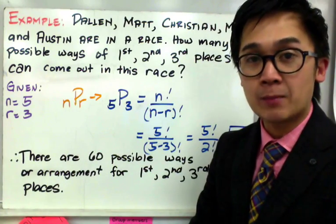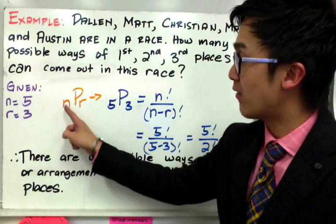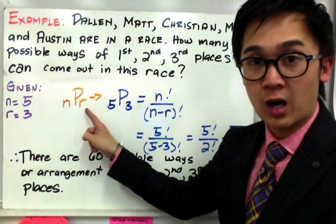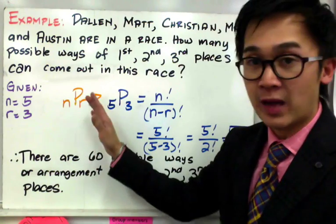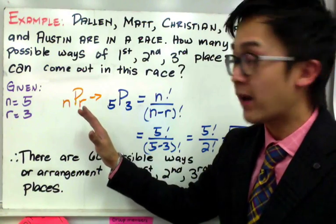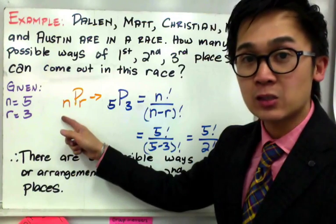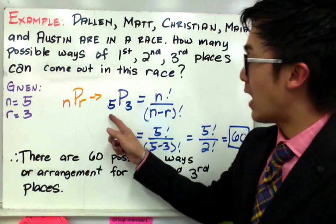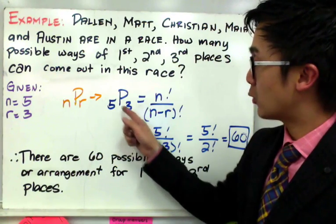one thing that you need to understand about permutation formula is that the value of n will always be bigger than the value of r. You cannot switch those two values because you're not going to be able to find your answer. So remember, n is always bigger than the value of r. So we have here 5 taken r at the time using permutation.